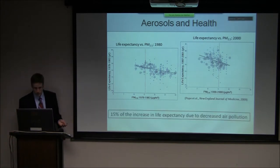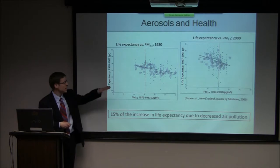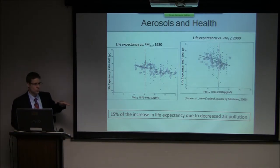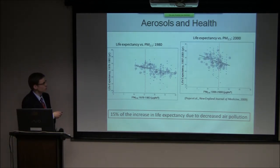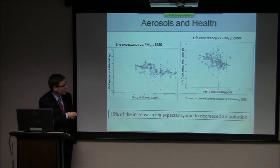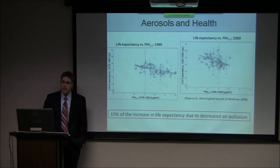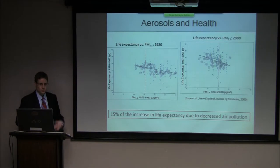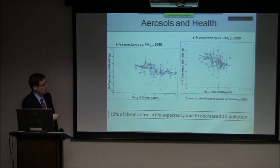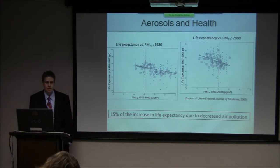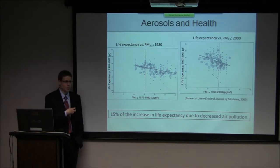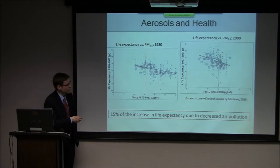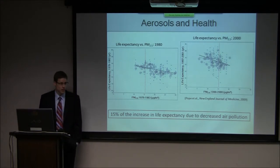...that 15% of this increase in life expectancy was due to reduced air pollution — reductions in PM2.5 concentration. You can see in these figures a red dotted line at about 15 micrograms per cubic meter, which is the EPA's current annual limit — the national air quality standard. Around 1980 most cities were exceeding this concentration; 20 years later, many more cities were actually below it. But this figure is now about 10–12 years old, so it is somewhat dated.